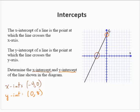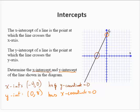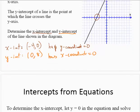Remember that the intercepts are ordered pairs, and one of the coordinates is 0. Every x-intercept has a y-coordinate of 0, and every y-intercept has an x-coordinate equal to 0. That's important to remember, because we can use that fact to help us graph equations.